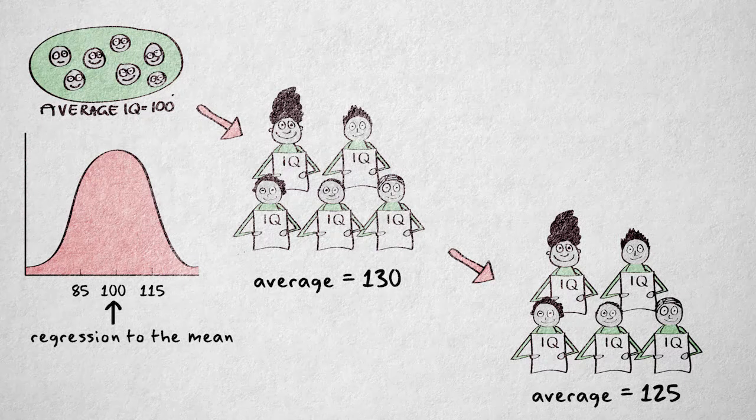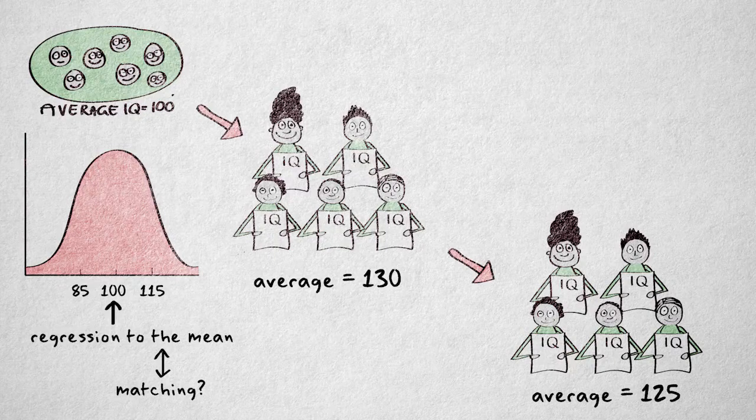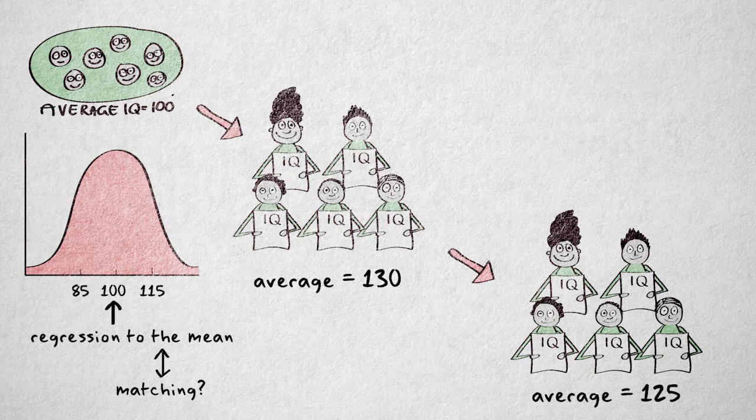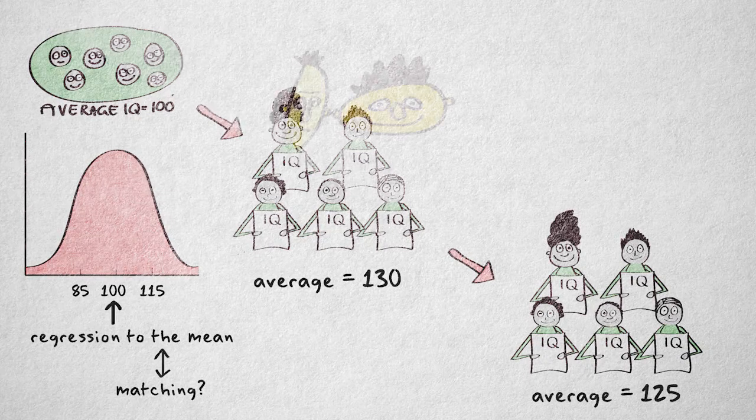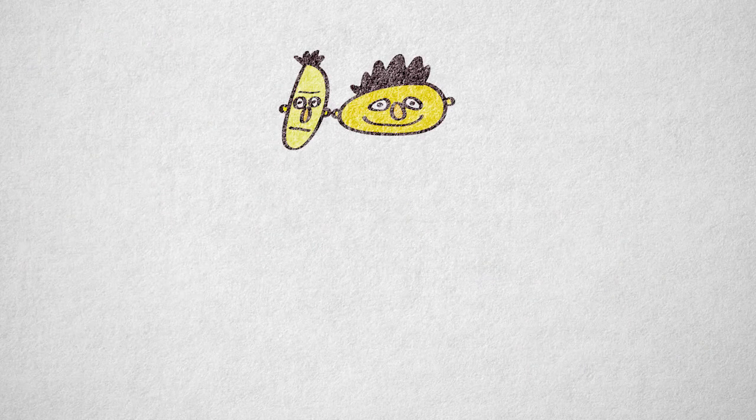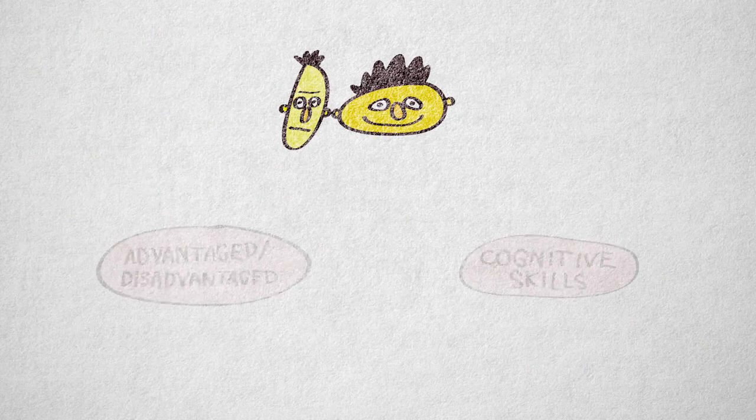How can this cause problems when we use matching to create comparable conditions? Well, suppose we want to investigate the effectiveness of watching Sesame Street in improving cognitive skills for disadvantaged versus advantaged toddlers.